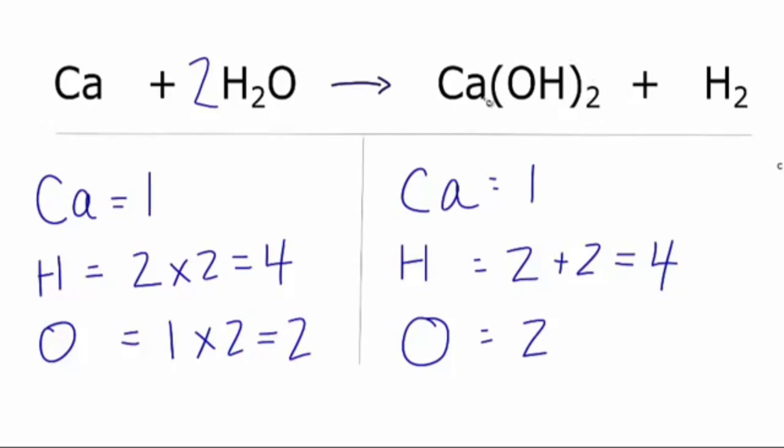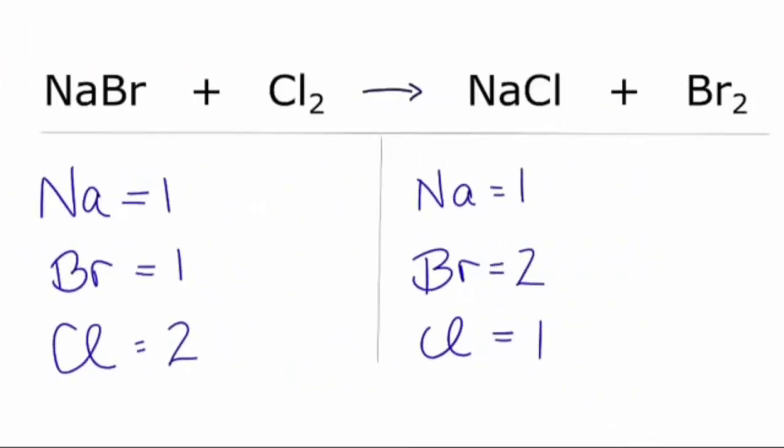In this single displacement reaction, let's start by balancing the bromine atoms. I have one bromine on the reactants, two on the products, so I put a two in front of the NaBr. And now one times two equals two. The Br is balanced, but I have one times two for the Na and they're not balanced. But the Br is correct.